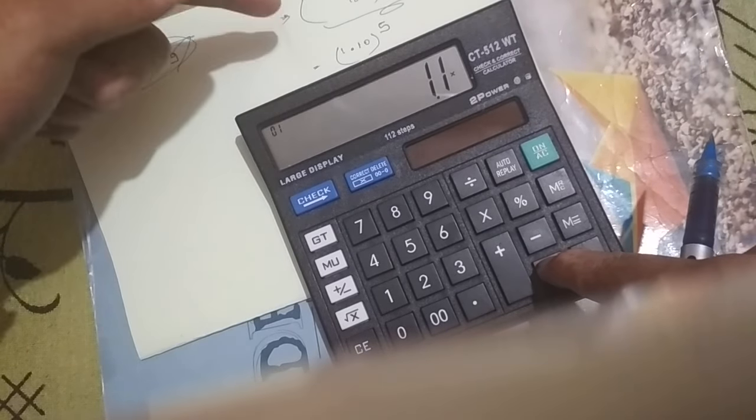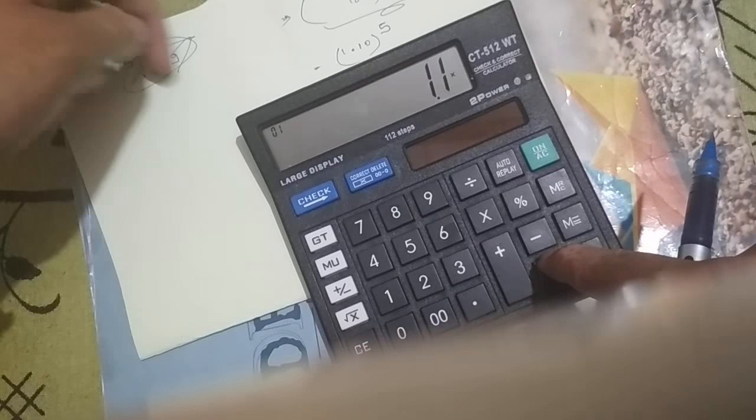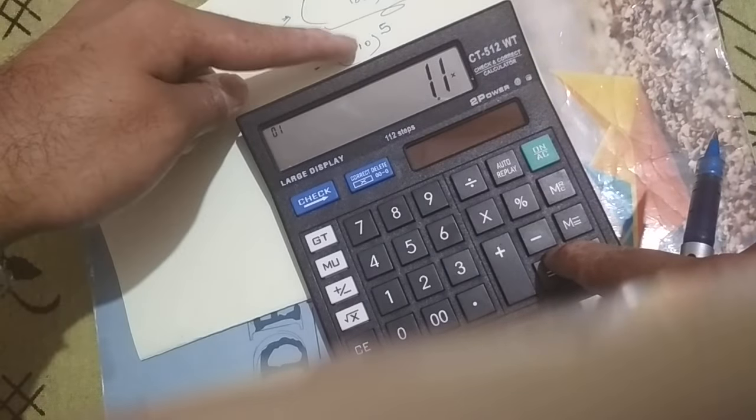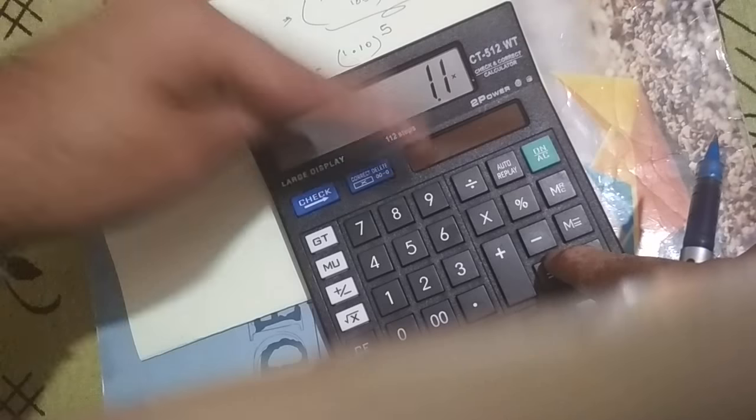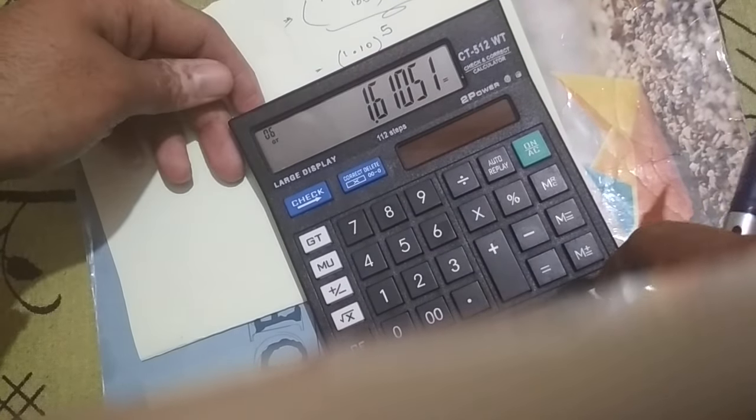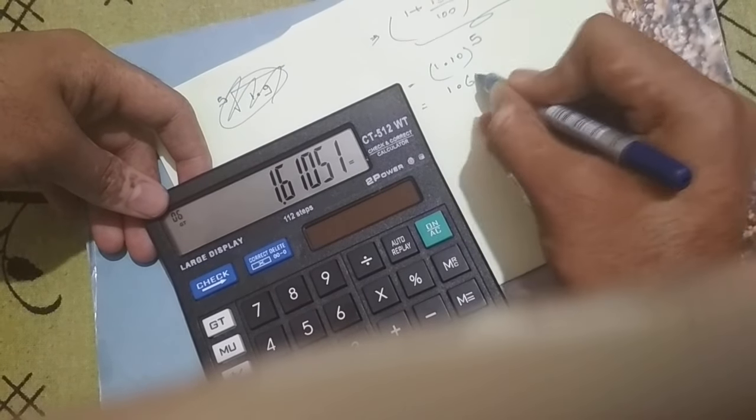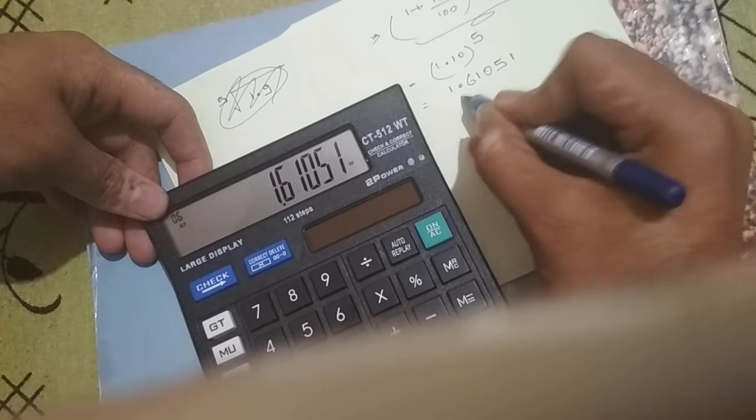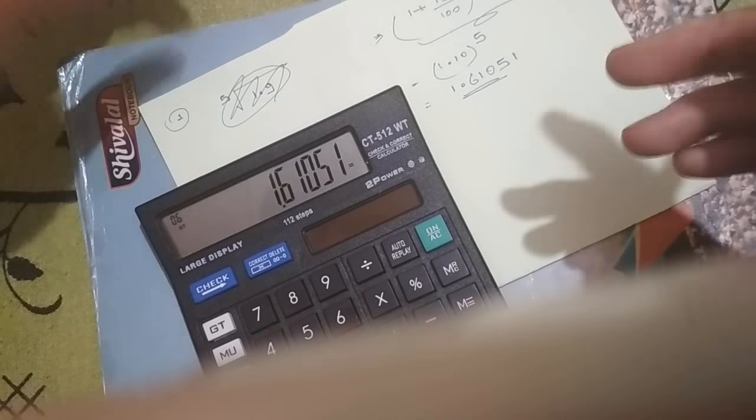For example, here the power is 5. You have to write 1.10 first, then press multiplication sign, then press equal to the number of times given minus 1. So you have to press equal to 4 times—1, 2, 3, 4. So you will get 1.61051 as an answer.